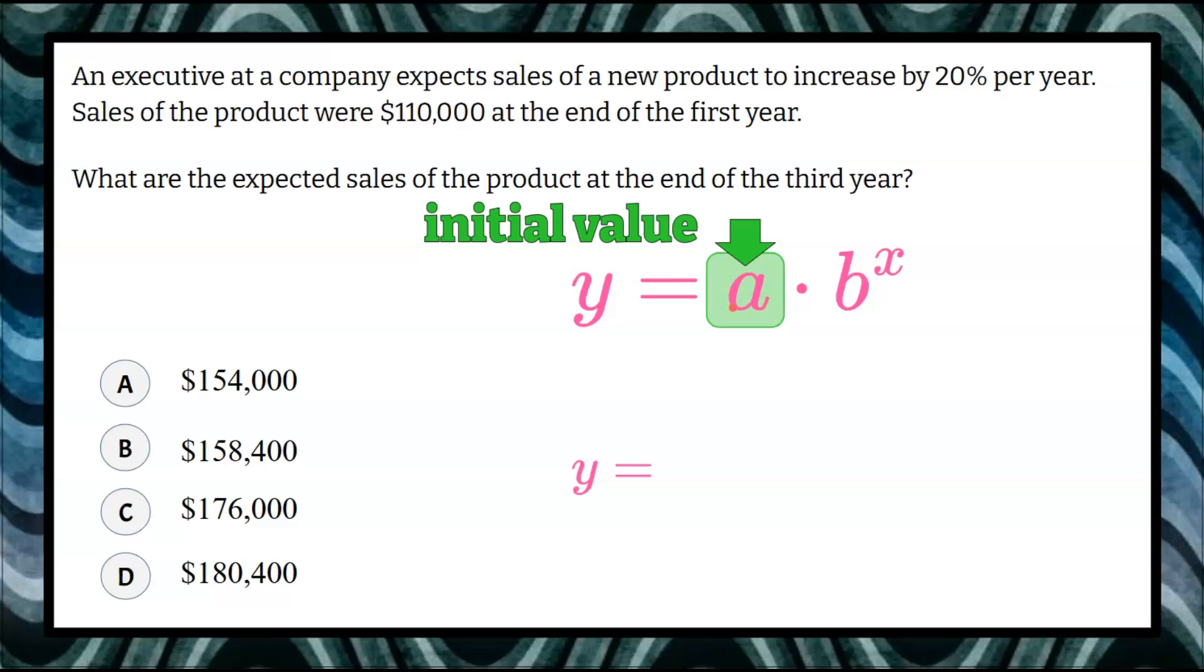That is going to be our factor A, that variable. We go back to our problem and can see that in the first year, that's our initial value. There was no sales prior to the first year, so we're going to put $110,000 in for A.